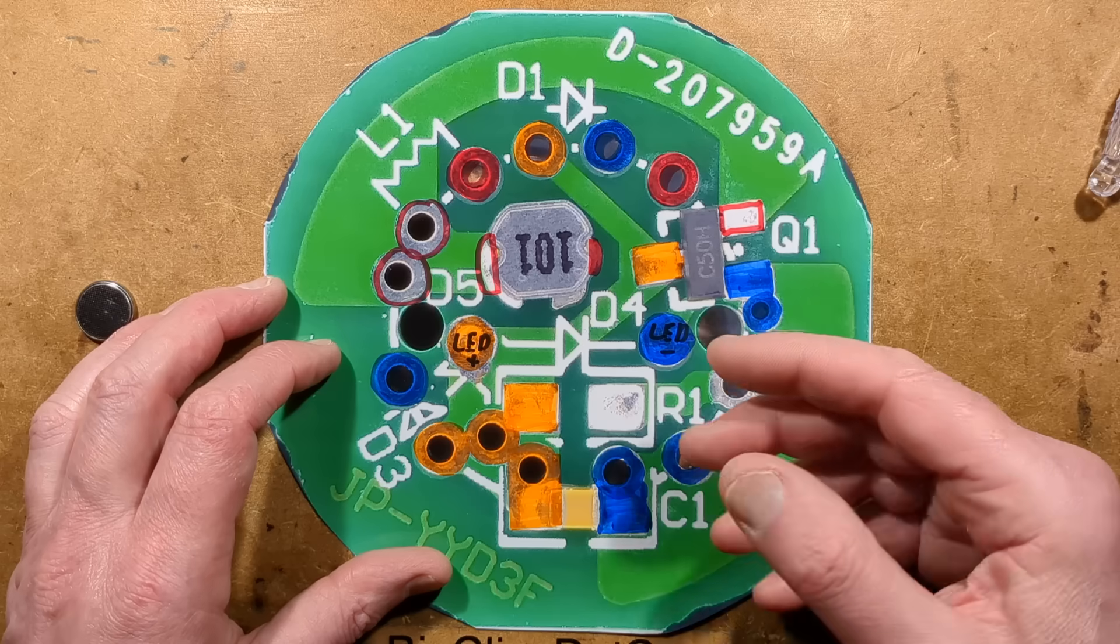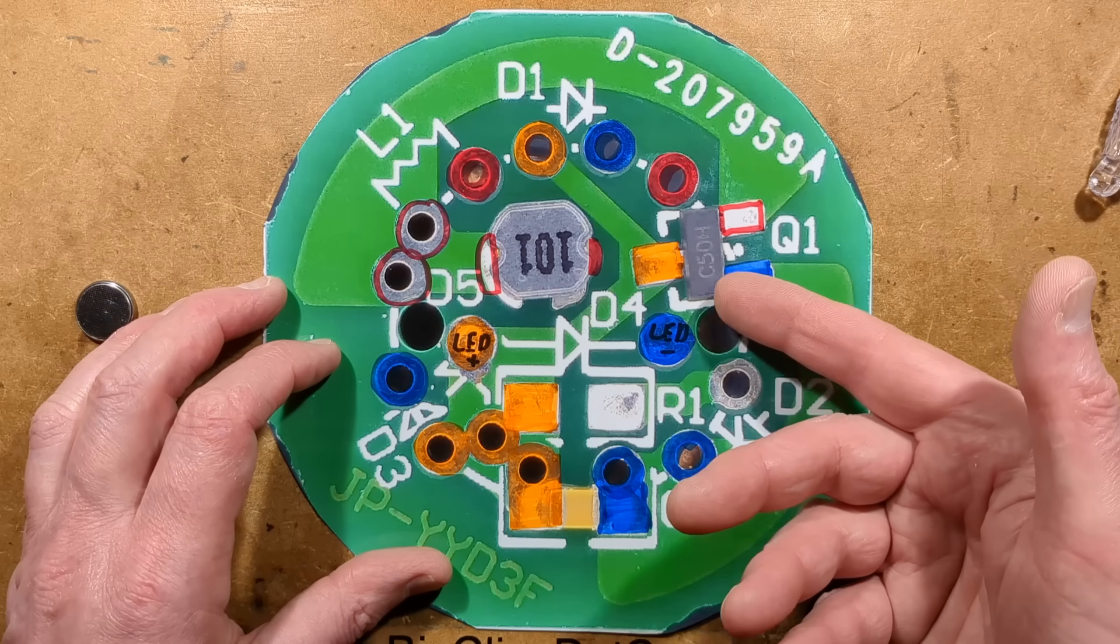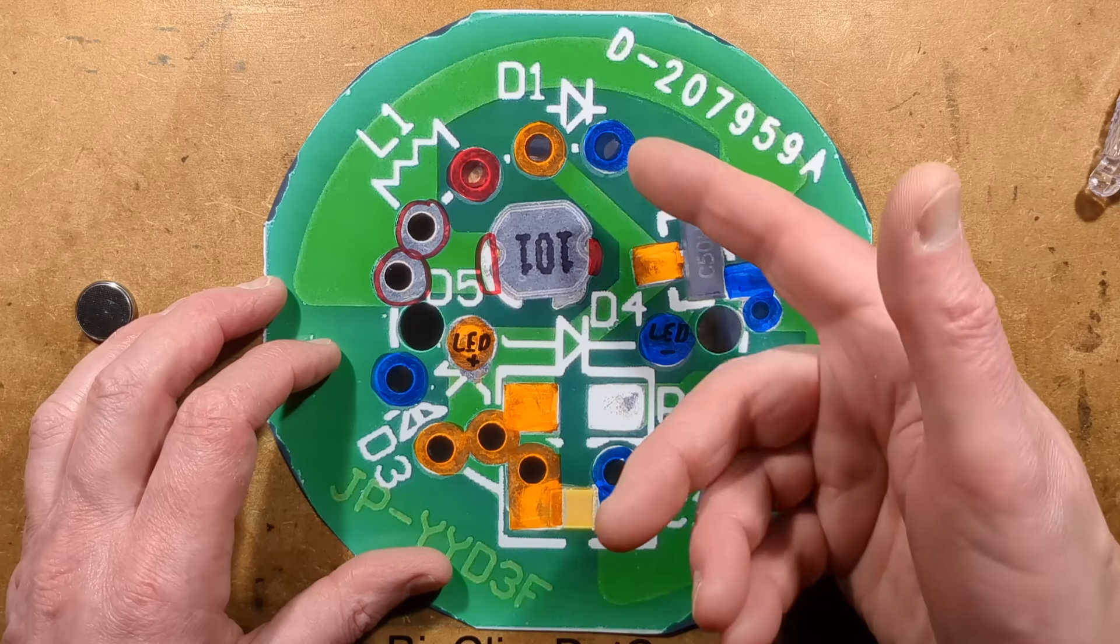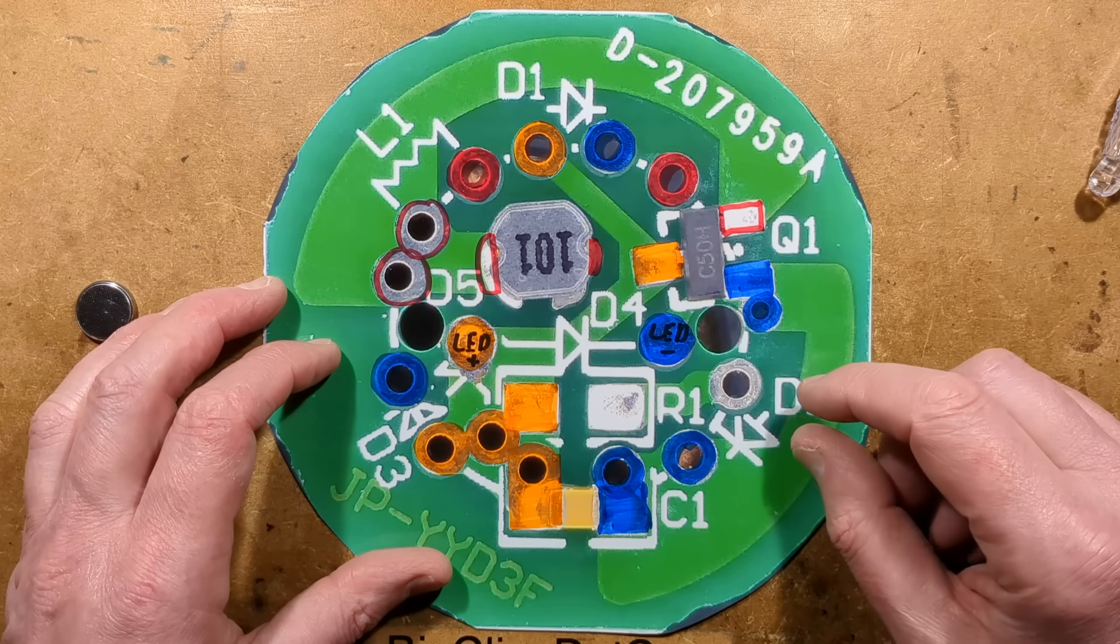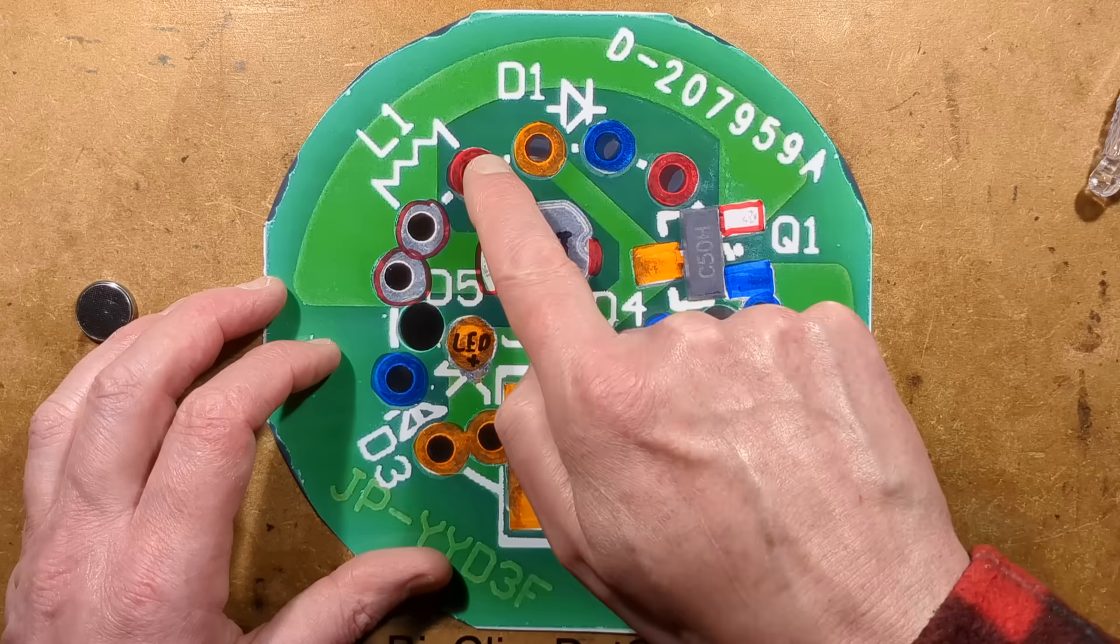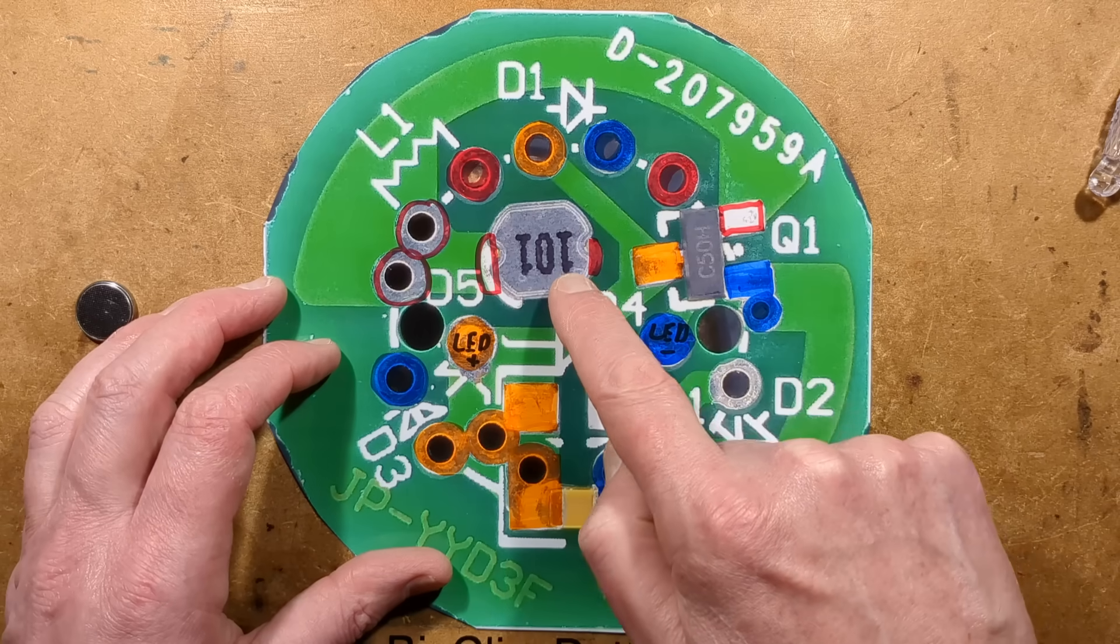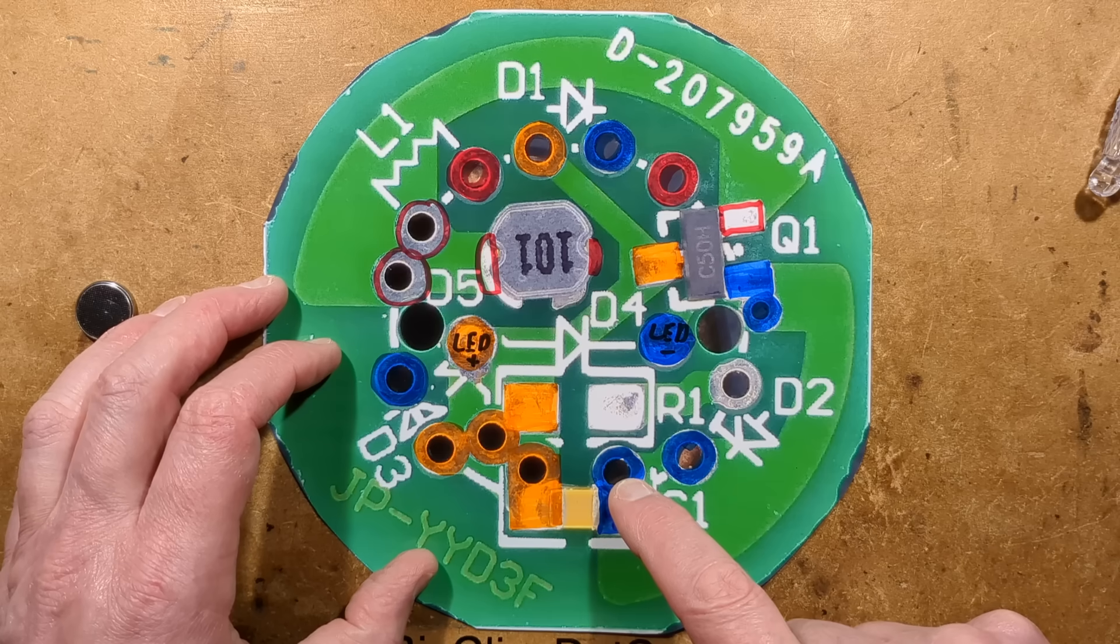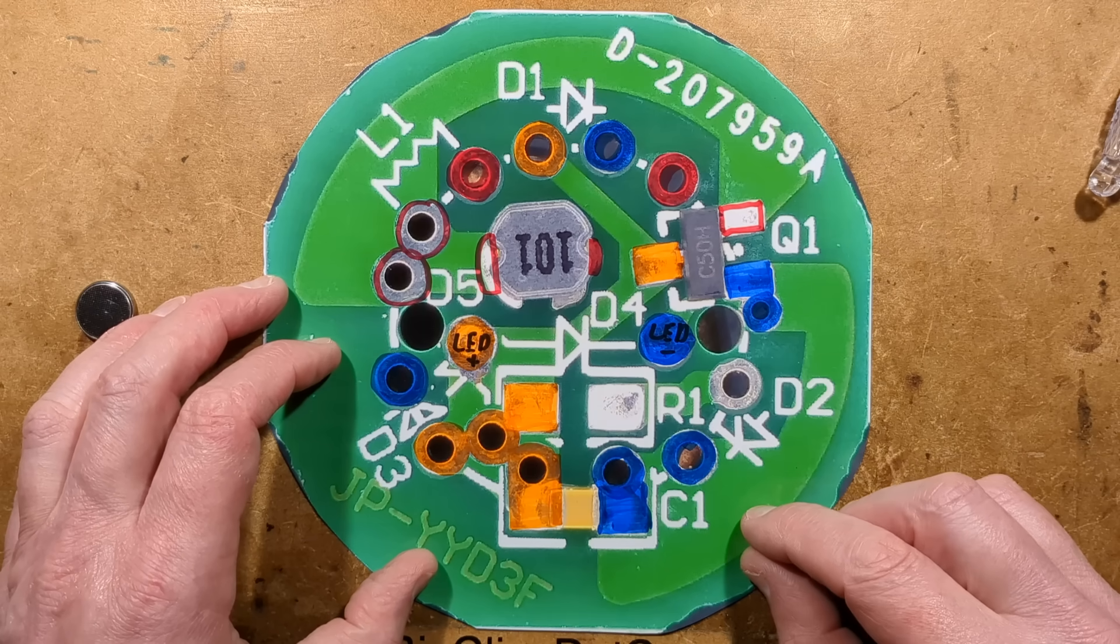Or it could just be because they also do it with a 3.3 volt regulator, or 3 volt regulator even, and just drive the LEDs directly. There is also the provision to use a through-hole inductor instead of the surface mount inductor, and also this capacitor can also be replaced with a through-hole capacitor. They've basically covered every avenue here.